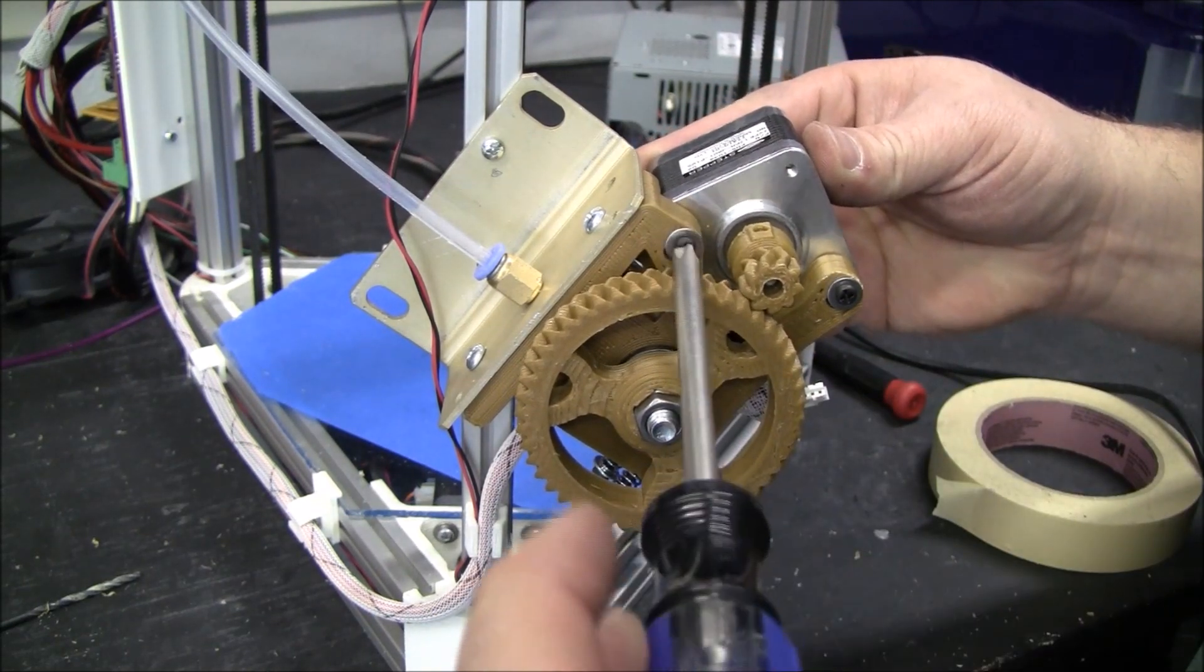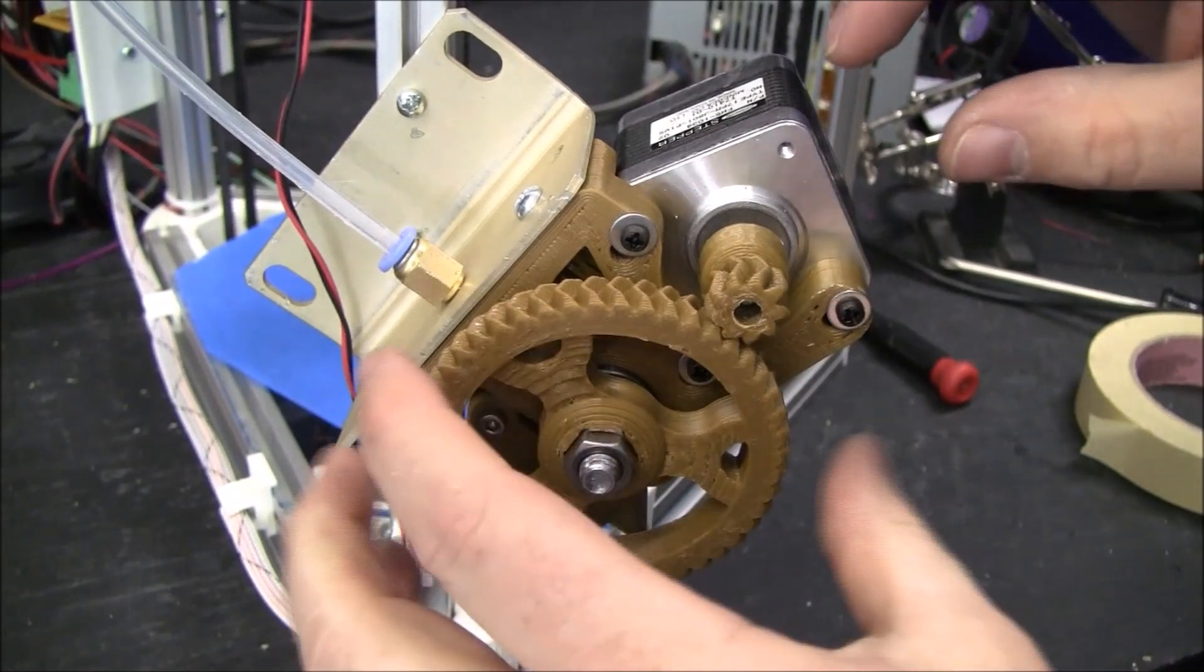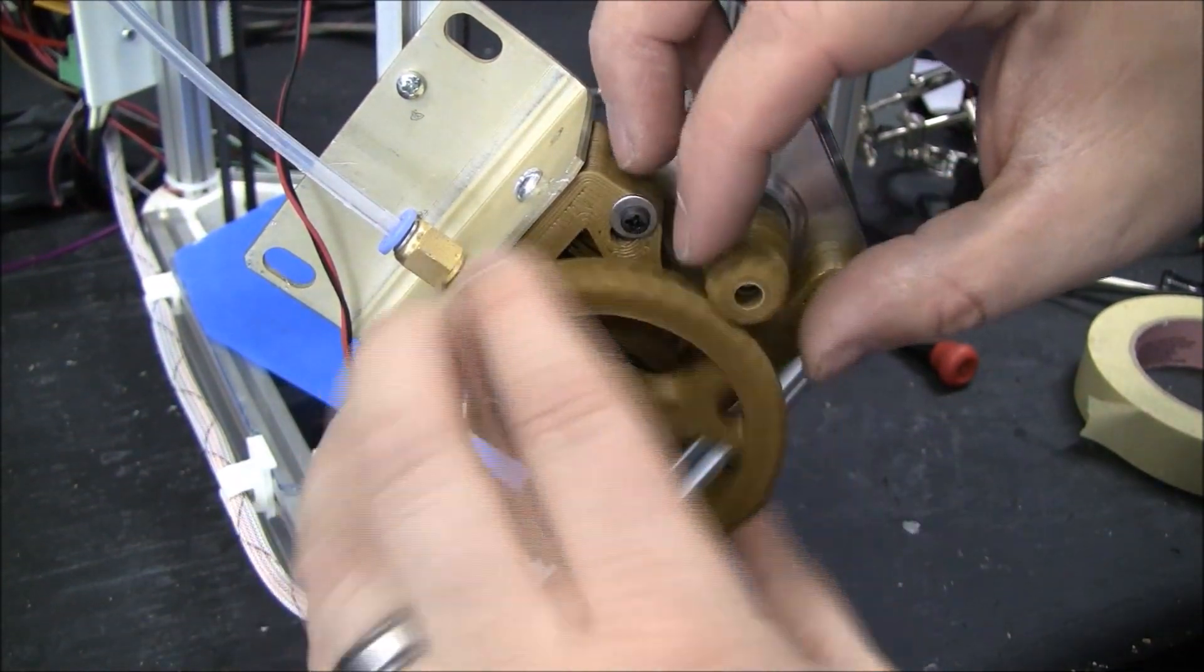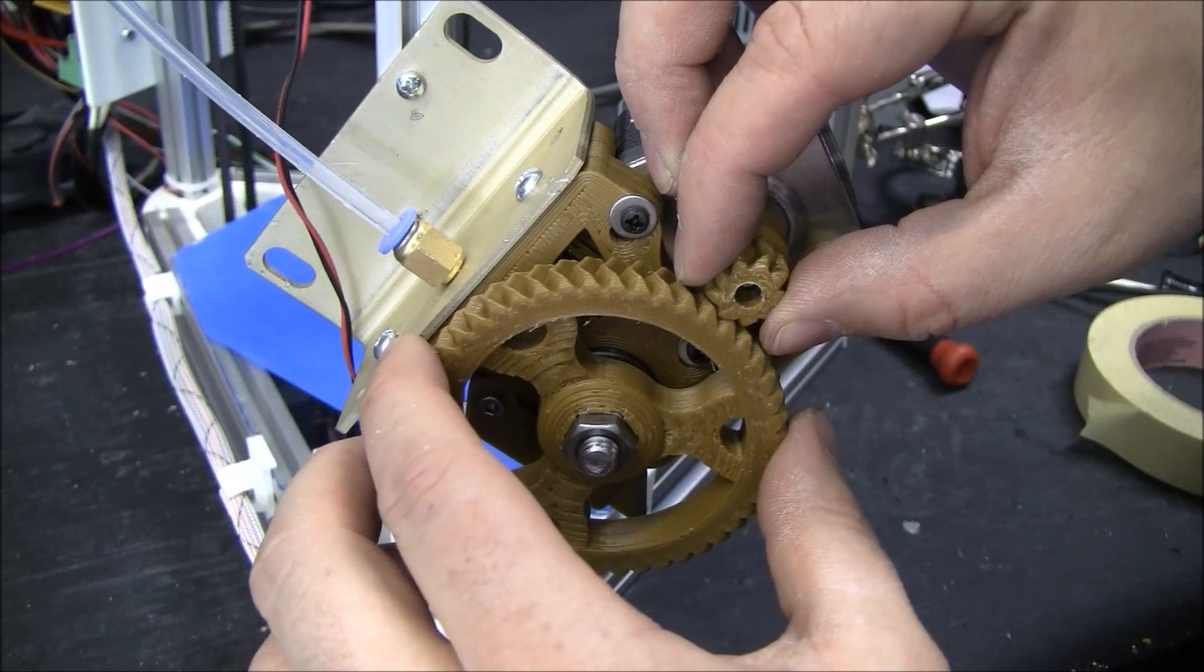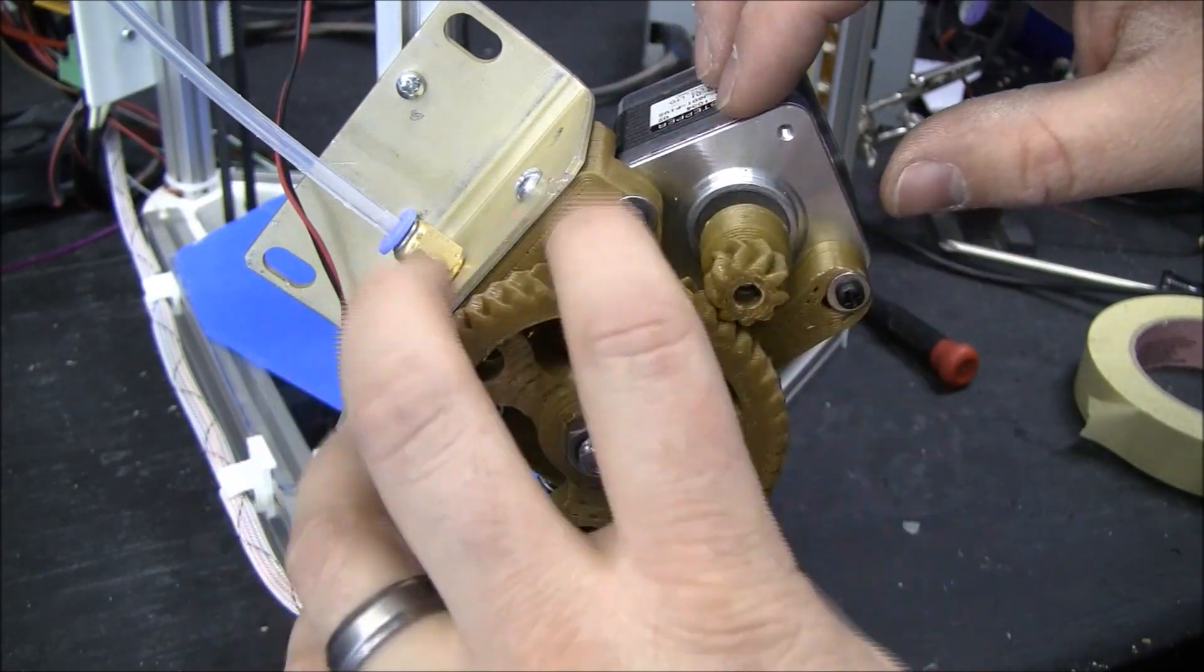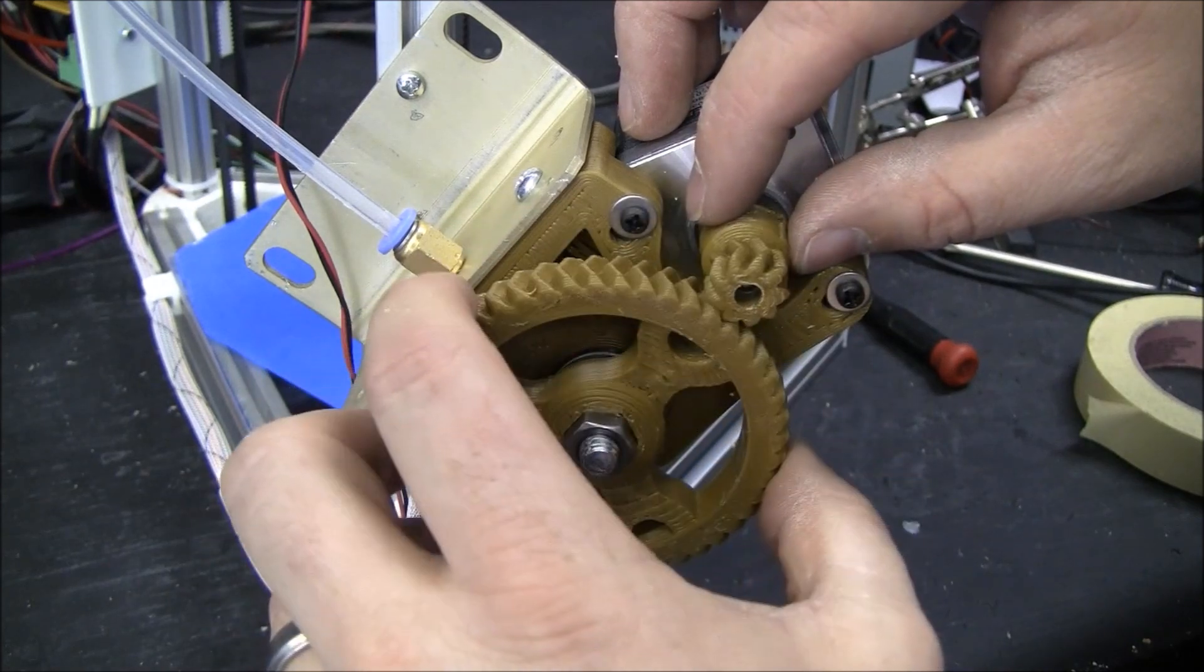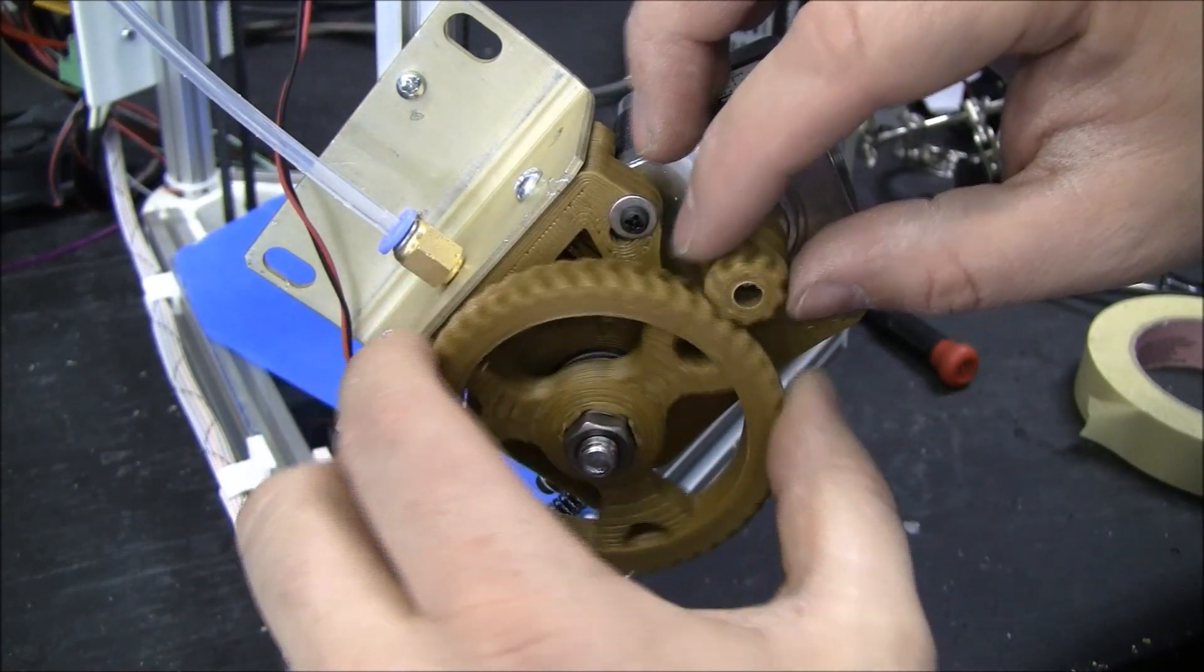It's longer screws with a washer on top. Finally got it where I want it. I mean, it's not sloppy. It's touching pretty good. But there's no undue drag just caused because the gears are too tight on each other.